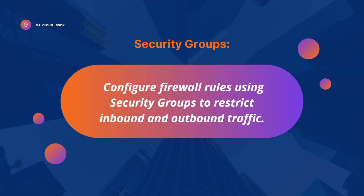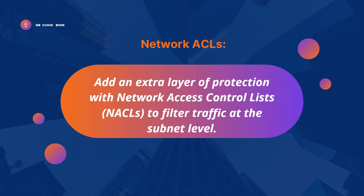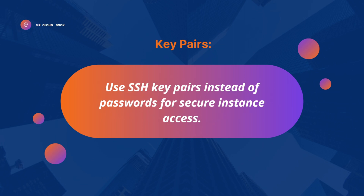For the fourth tip, Network ACLs — add an extra layer of protection with Network Access Control Lists to filter traffic at the subnet level. Network ACLs filter at the subnet level, while security groups filter at the EC2 instance level. Network ACLs act as neighborhood security patrols. For example, you can create a network ACL for your web server subnet to allow HTTP and HTTPS traffic while blocking other types of communication.